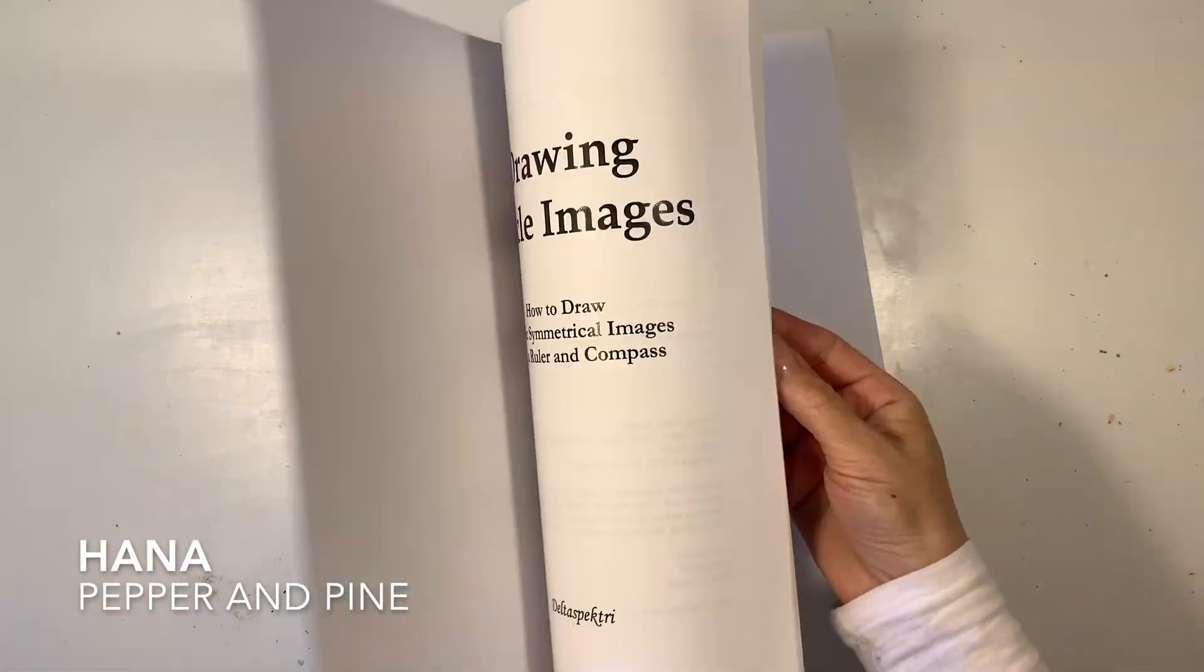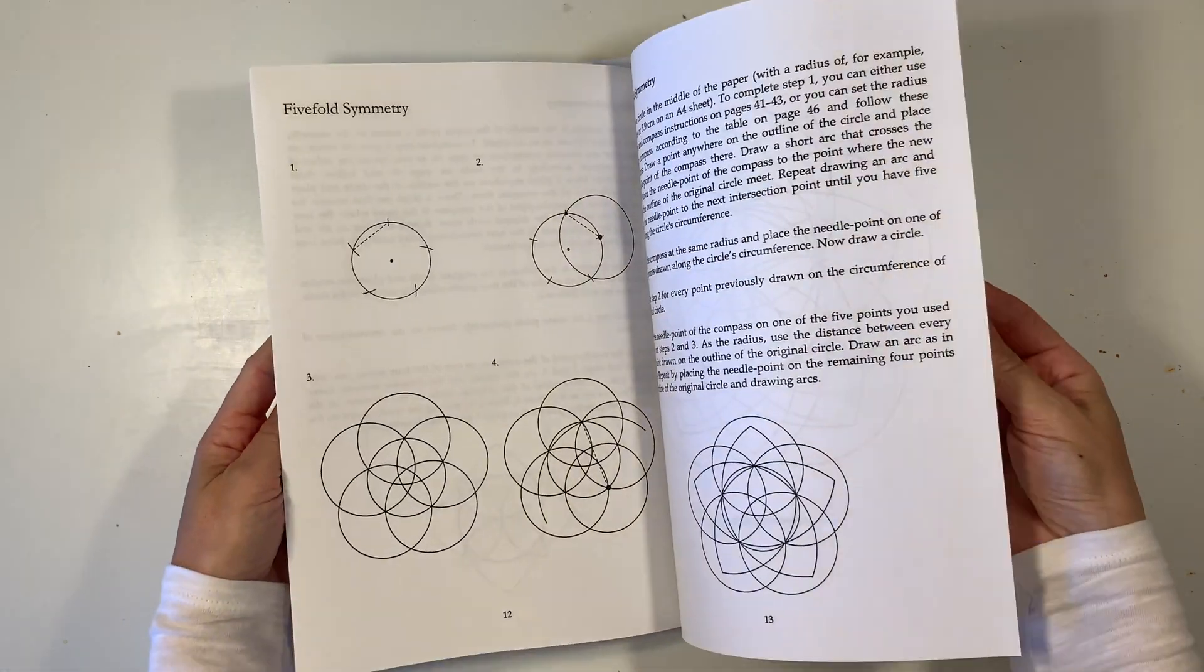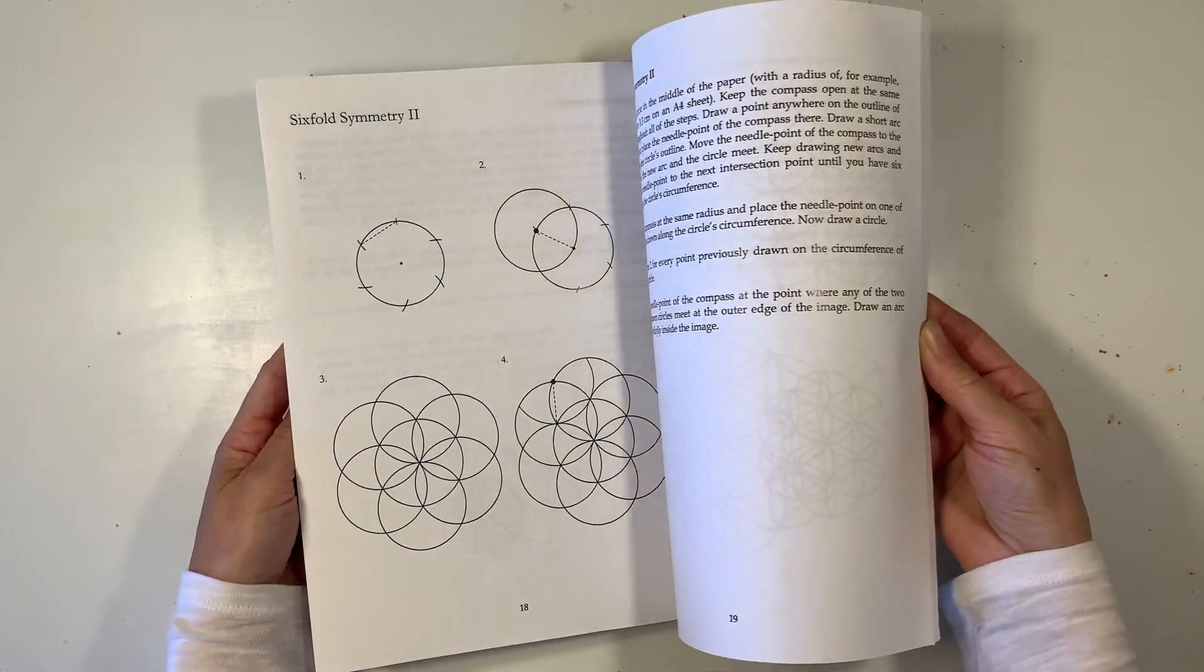Hi everybody, my name is Hannah and this is Pepper and Pine, and I have a chalk drawing to share with you today. We are going to be doing the 12 divisions of a circle.